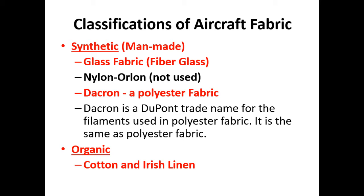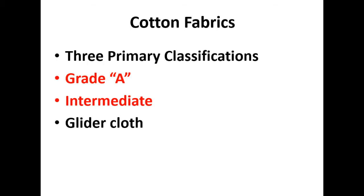Among the cotton fabrics — our organic fabrics — we have three primary classifications. The first two are the ones we really need to know: Grade A, and intermediate, which is a little bit weaker than Grade A, and glider cloth, which is specifically for gliders. Egyptian cotton is considered one of the highest qualities; its staple length determines its quality.